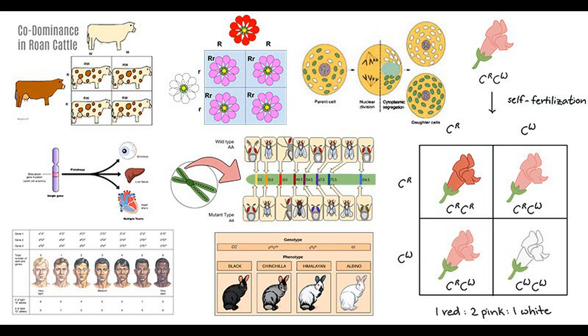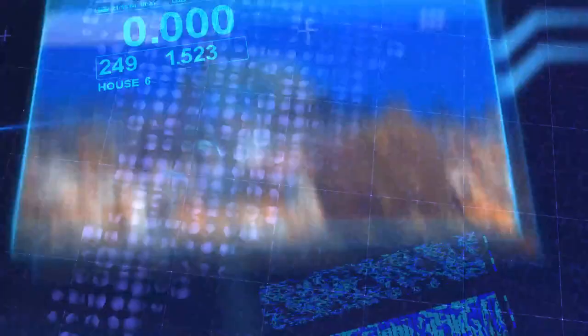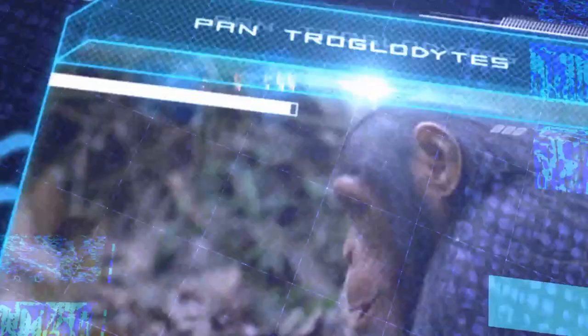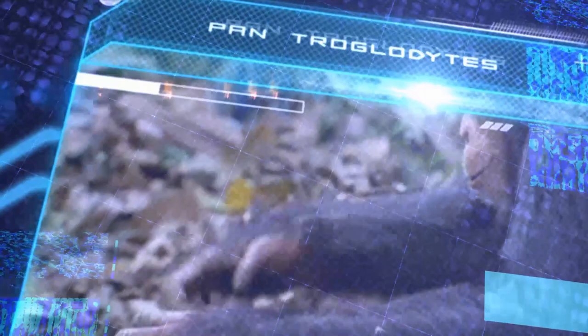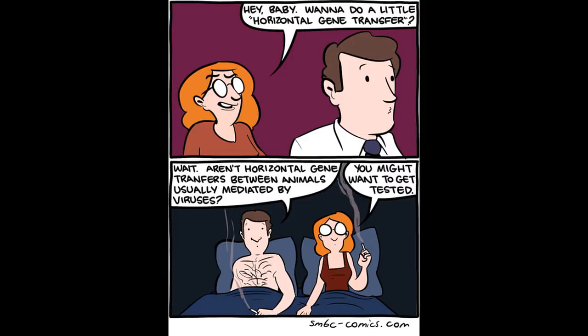Here we will look at yet another and very unintuitive exception. HGT is very counterintuitive to how we usually think DNA is inherited. Ironically, HGT played a key role in the historical discovery of DNA as the material of inheritance.